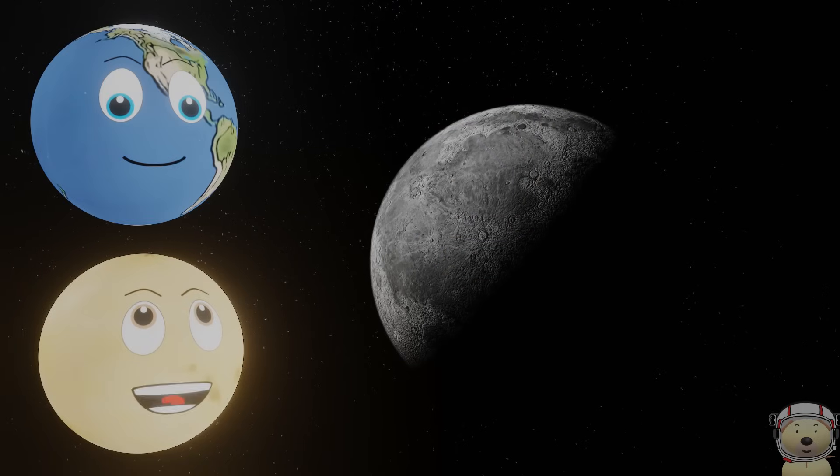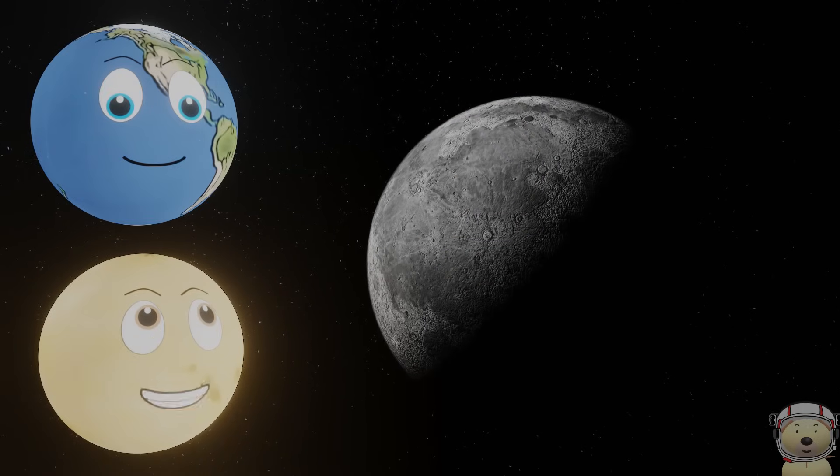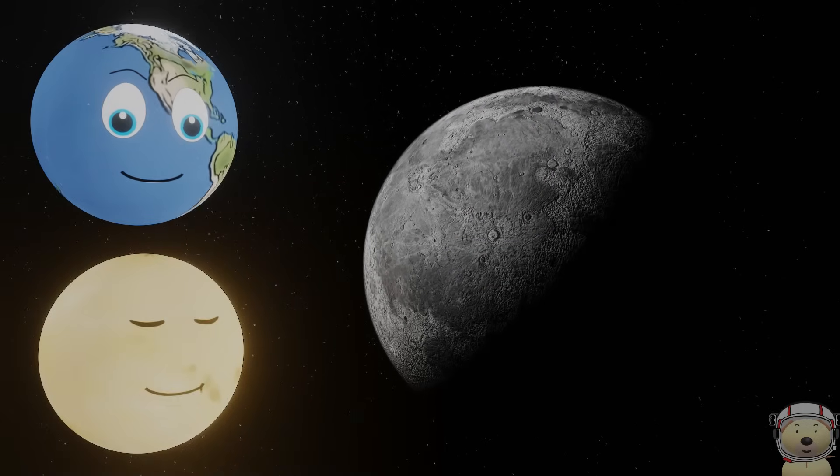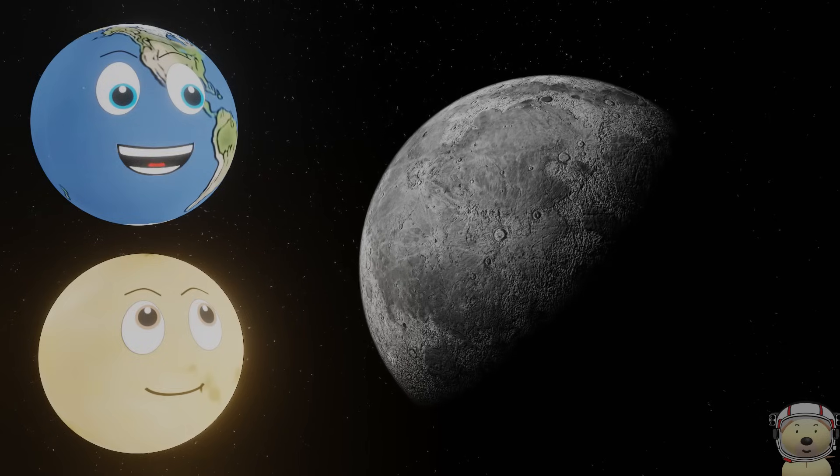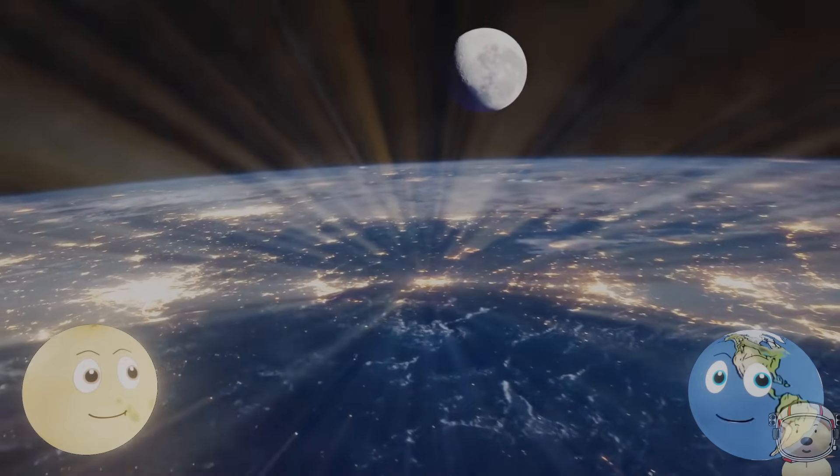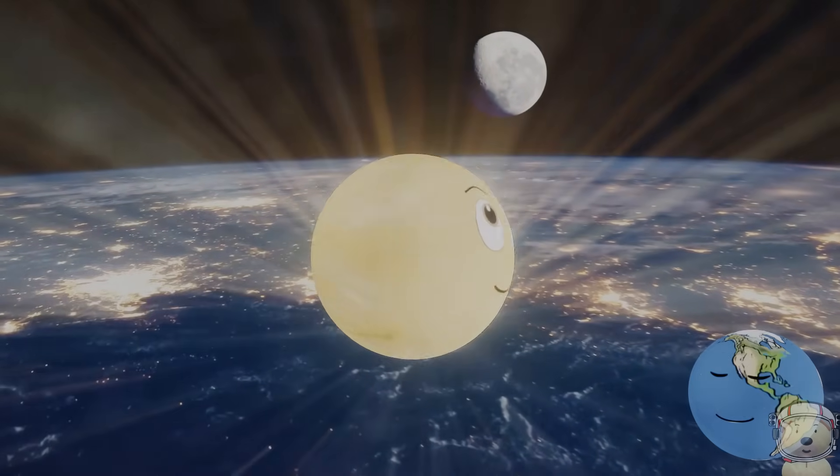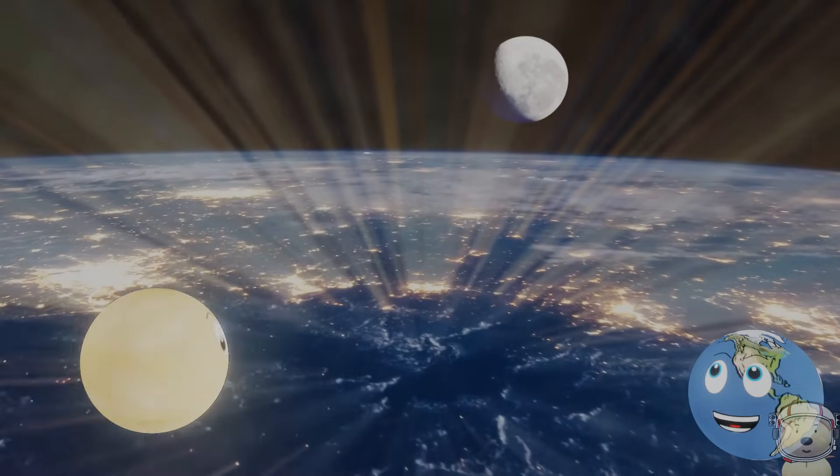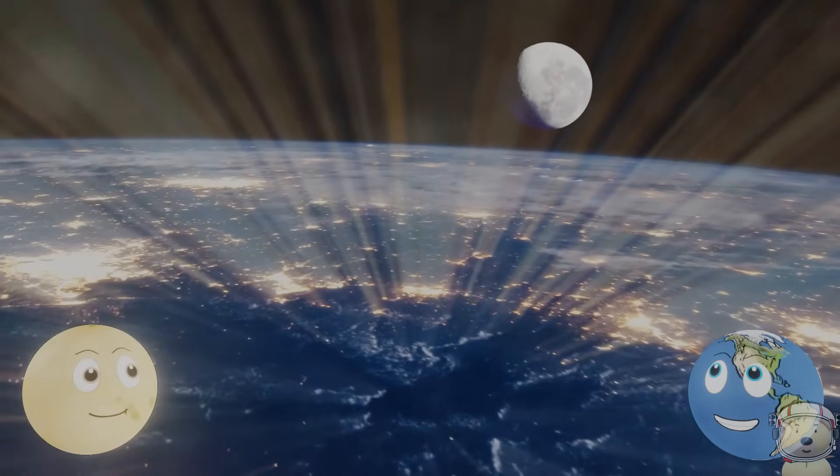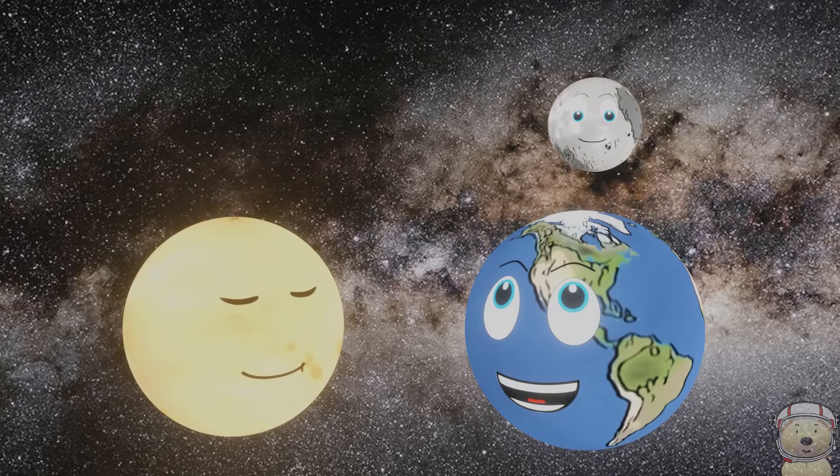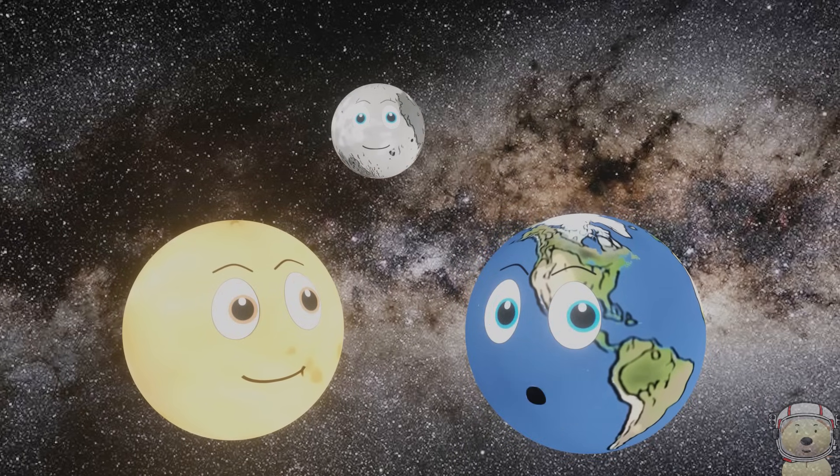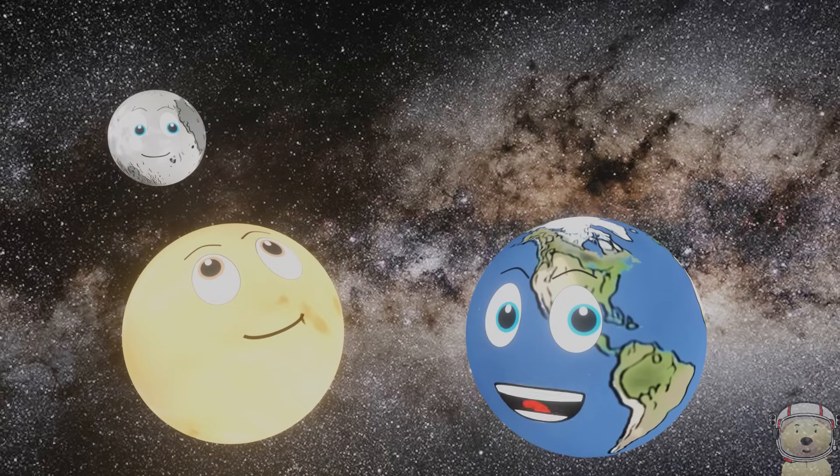But it looks like the same side of the moon always faces us. Well, here's the interesting thing. The moon orbits the Earth in 27 days, but it also rotates in about 27 days. So for that reason, the same side of the moon is always facing the Earth. Wow!